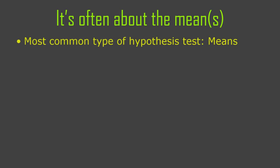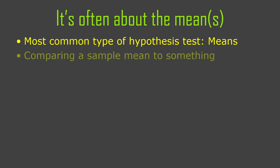Many hypothesis tests are about means — it's probably the most common type. You can do hypothesis tests about variances, regression lines, and correlation coefficients and get really fancy. But by far the most common thing is testing means. So we compare a sample mean to something: we've got a sample mean of a numerical variable drawn from a population, and we want to say something about that population.